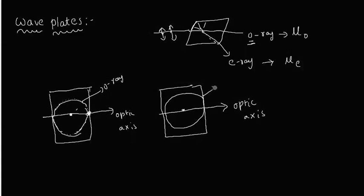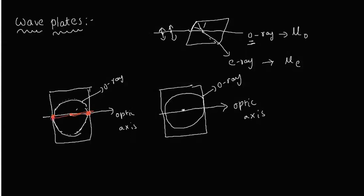This is also the path of the ordinary ray. Now let's consider the extraordinary ray. For the first crystal, from every optic axis direction the ordinary ray travels an equal distance. Along the optic axis direction the ordinary and extraordinary rays travel the same distance, but in other directions the extraordinary ray travels a different distance.